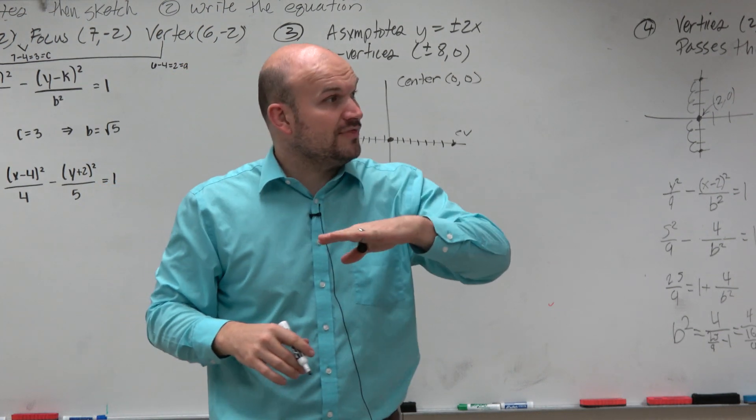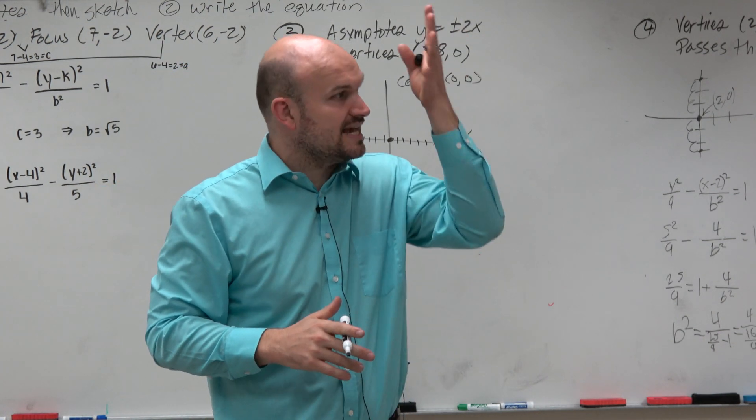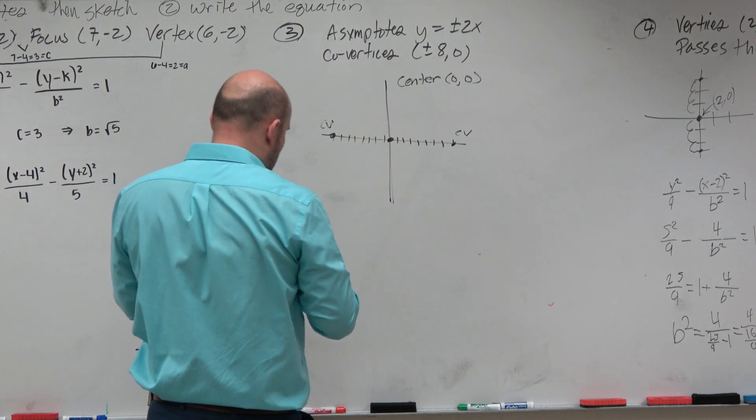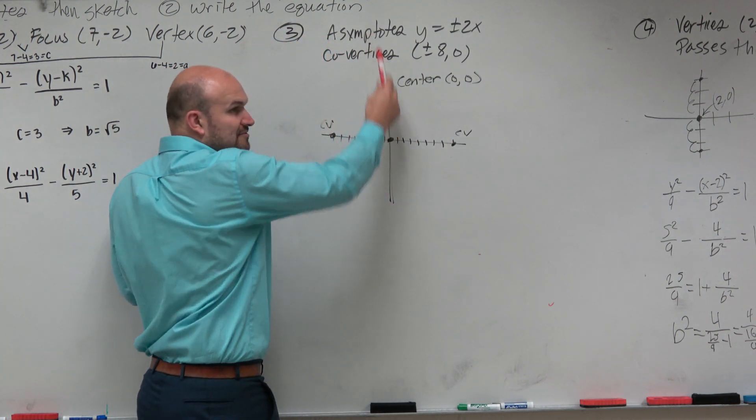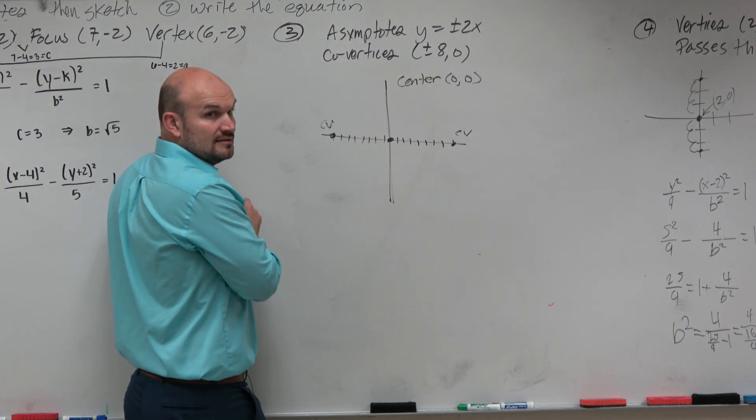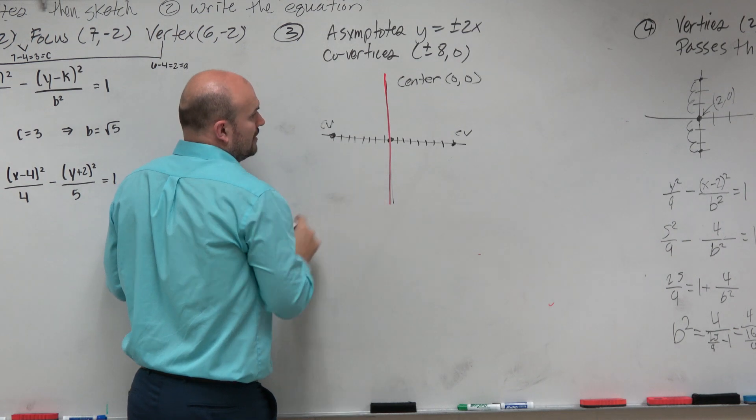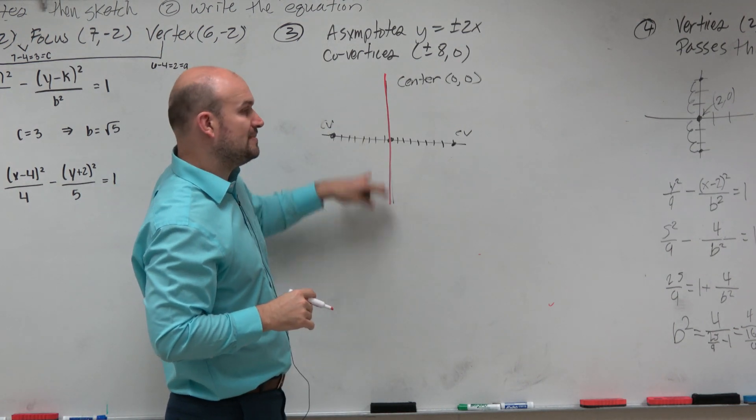Also, I know that the transverse axis is where the vertices and the foci are. So if my covertices are left and right, that means my vertices have to be up or down, correct? That means my transverse axis is going to be vertical.